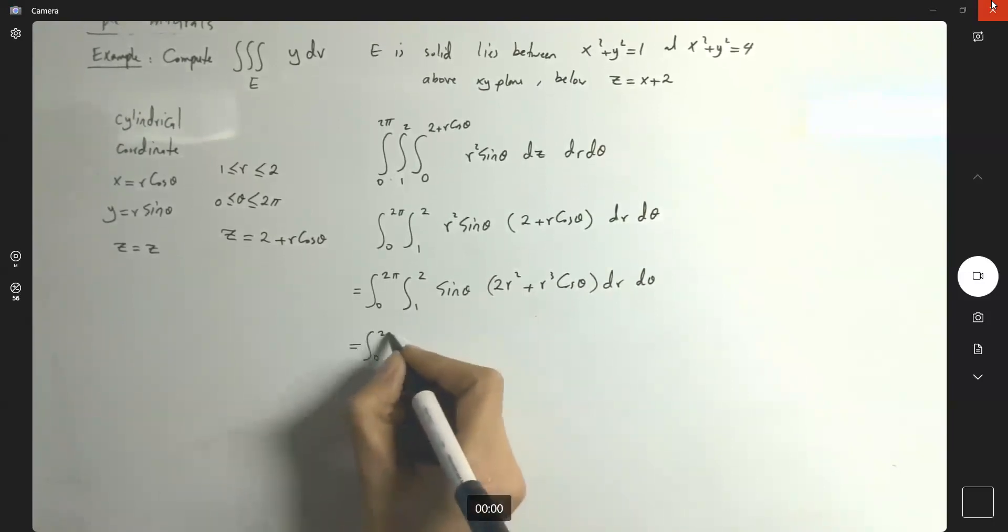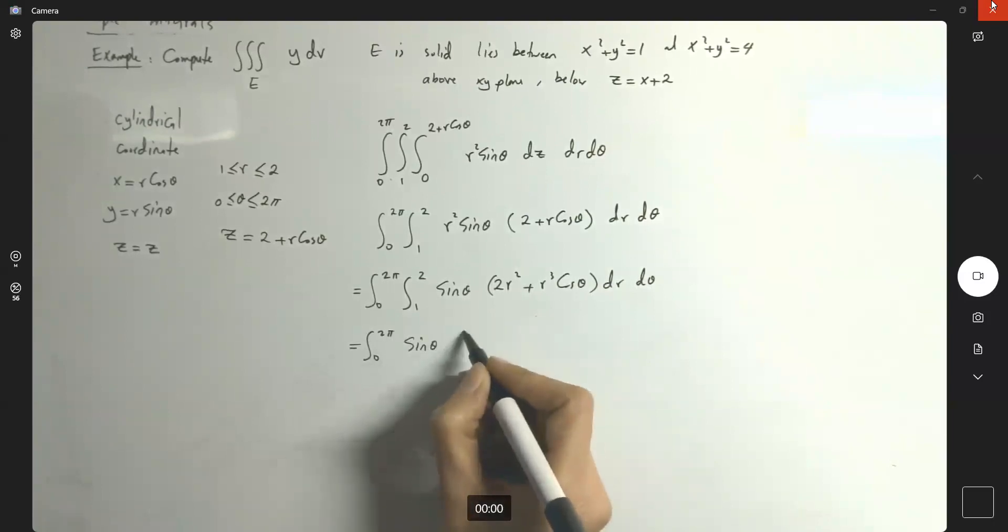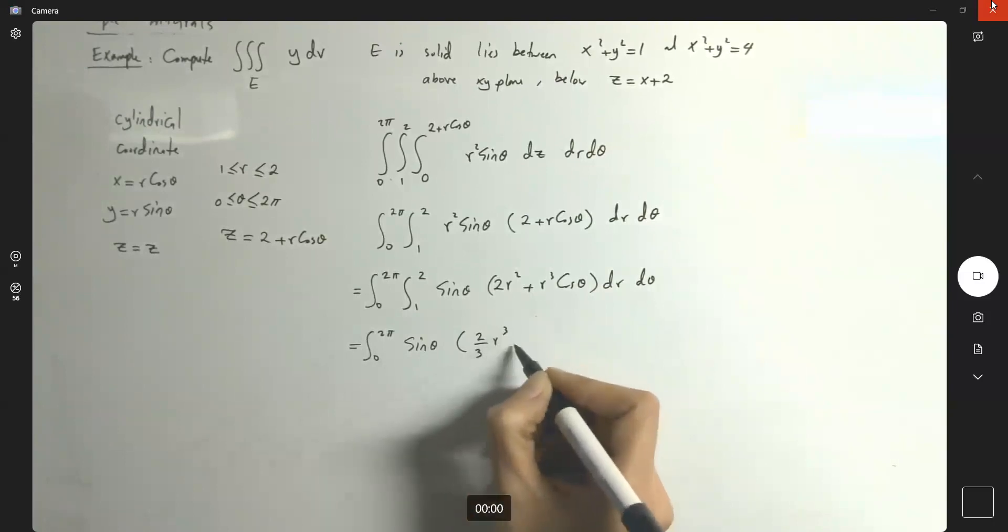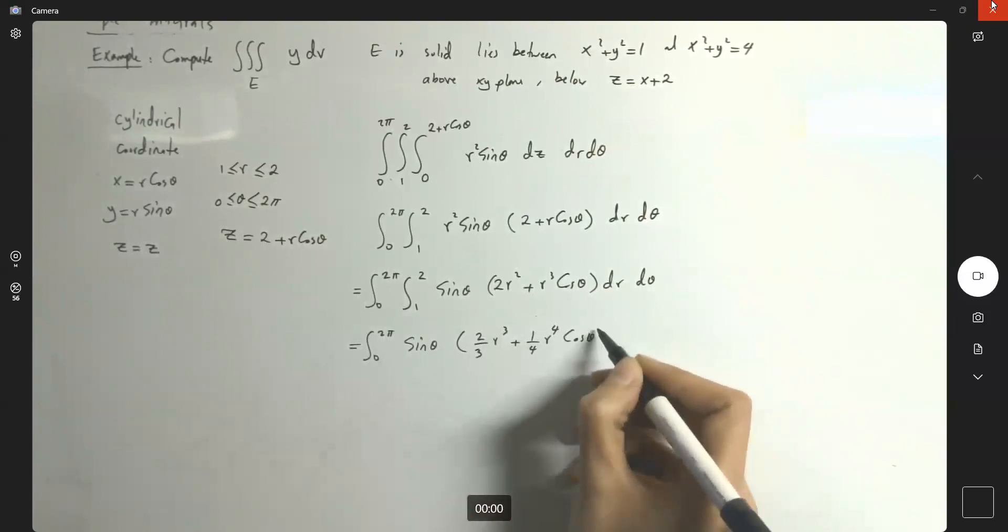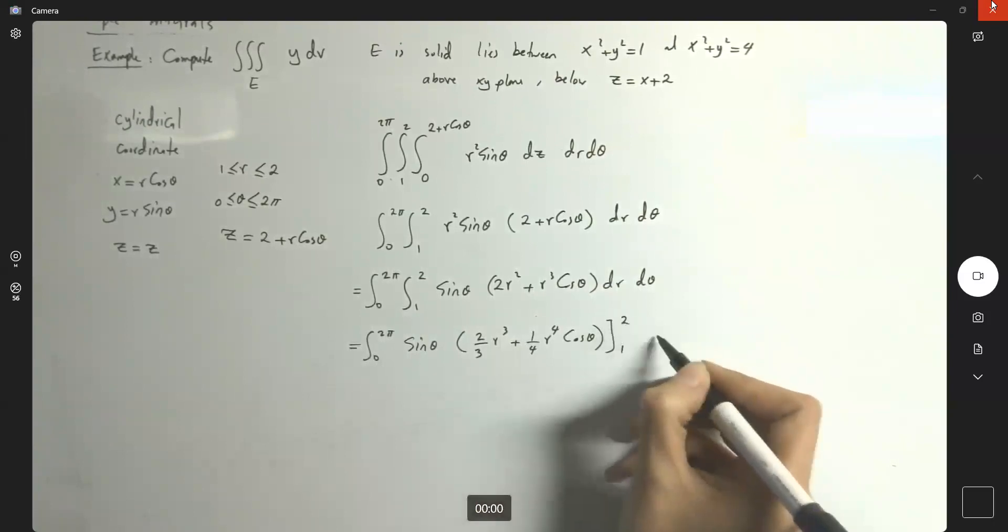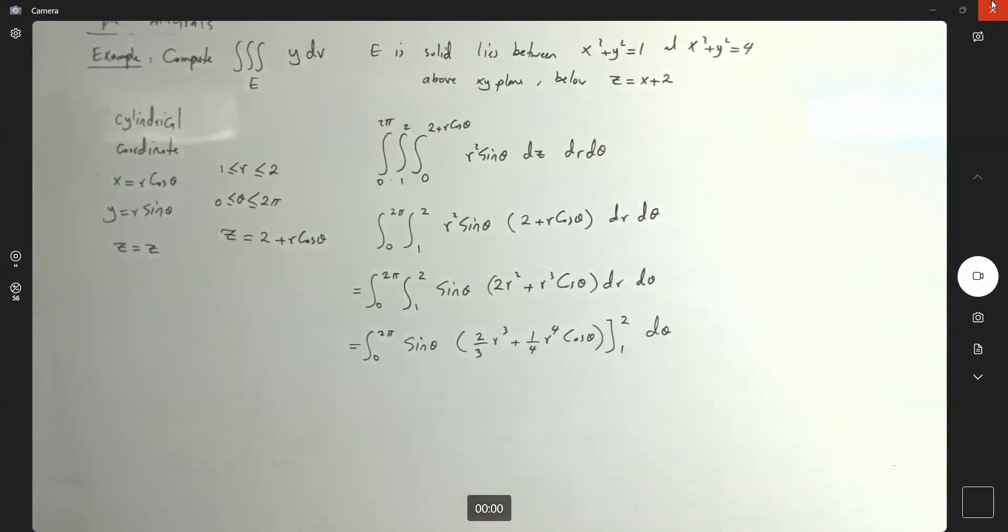This guy becomes very good. Here integral 0 to 2 pi. And here I have sine theta. And I get 2 thirds r cubed plus 1 fourth r to the fourth cosine theta. r is bounded between 1 and 2 d theta.